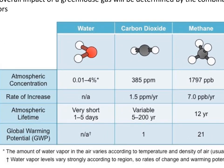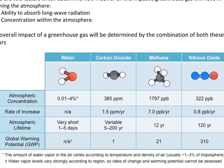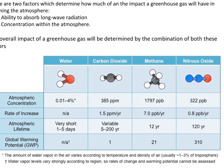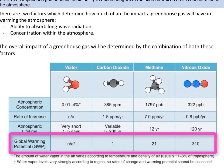For example, methane has a larger capacity to absorb long-wave radiation than carbon dioxide, but it's significantly less abundant. Water vapor enters the atmosphere rapidly but only remains for short periods, while carbon dioxide persists for years. Human activity is increasing the amount of greenhouse gases, except water vapor, and hence increasing their impact. For nitrous oxide, it has the longest existence in the atmosphere, but there's not so much in the atmosphere. Scientists have indicated this with a global warming potential.